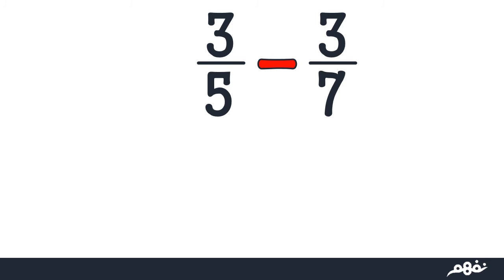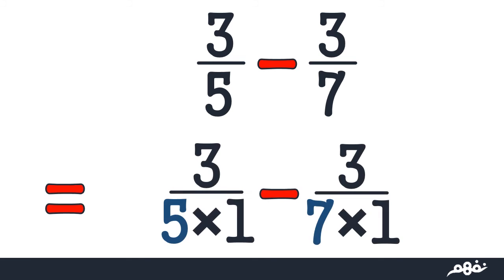So it's equal to 3 over 5 minus 3 over 7, equal to 3 over 5 times 1 minus 3 over 7 times 1. You got it: 7 is odd for this term, and so 5 is odd. Multiplication by 1.